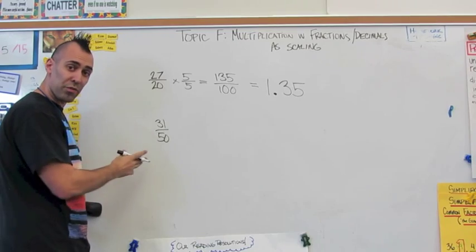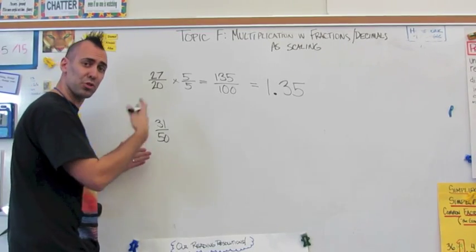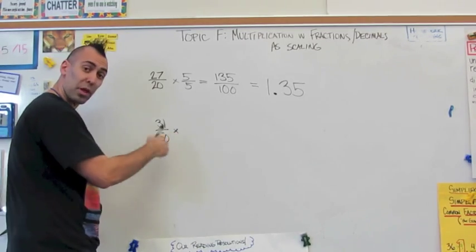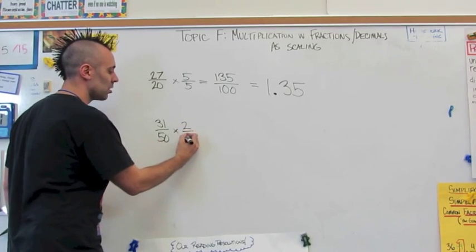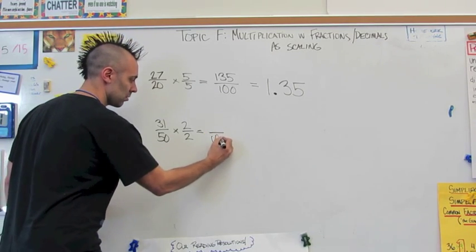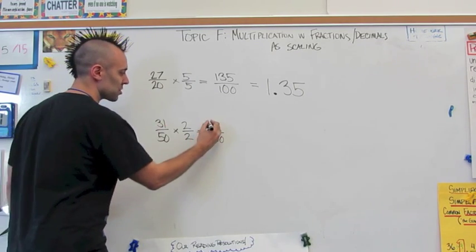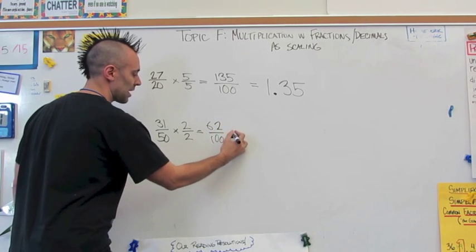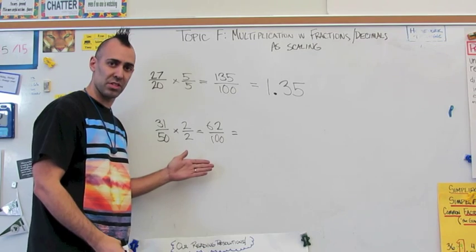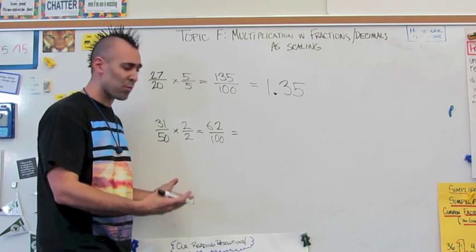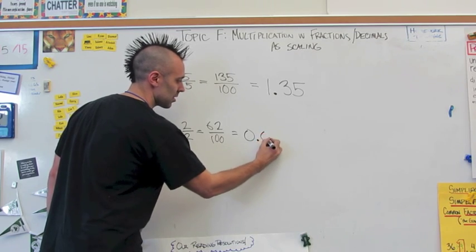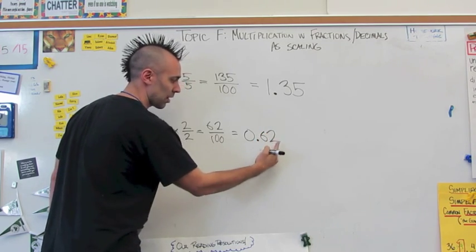With 31 fiftieths, I know that 50 times 2 will give me a denominator of 100. So I'm going to multiply the whole fraction by 2 over 2. My new denominator is 100. 31 times 2 is 62. And so as a fraction, I read this as 62 hundredths. As a decimal, I read and write it the same way: 62 hundredths.